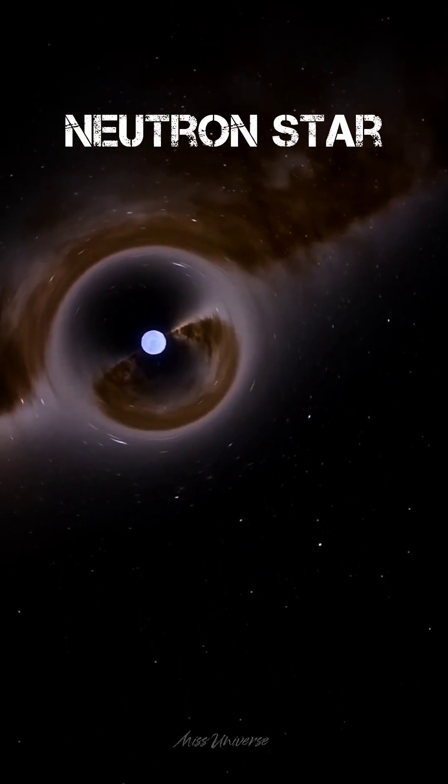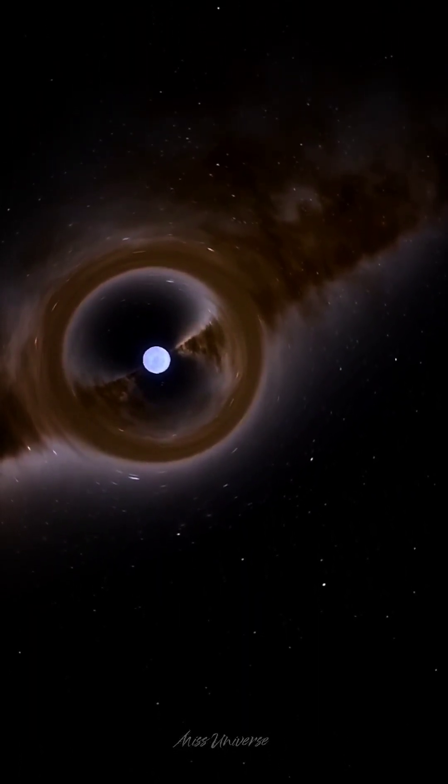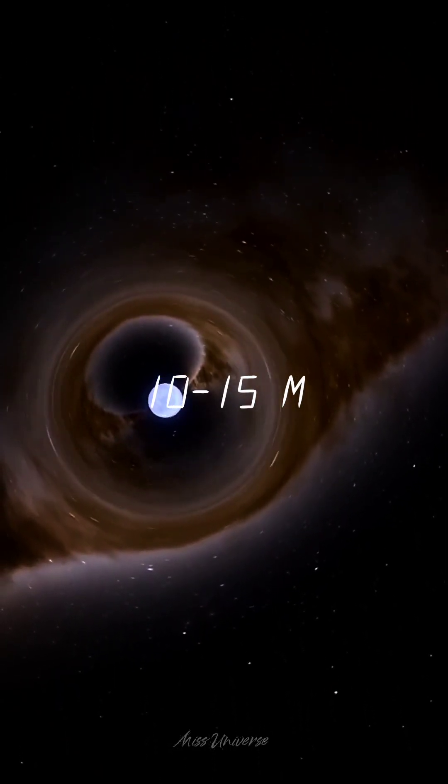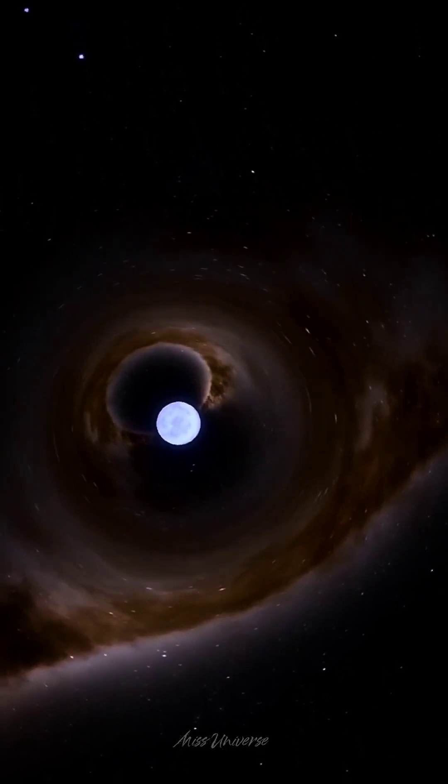A neutron star is the collapsed core of a massive supergiant star which had a total mass of between 10 and 15 solar masses, possibly more if the star was especially metal-rich.